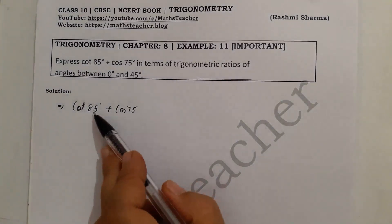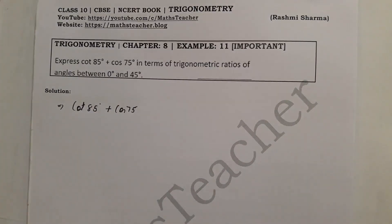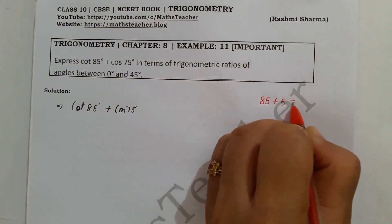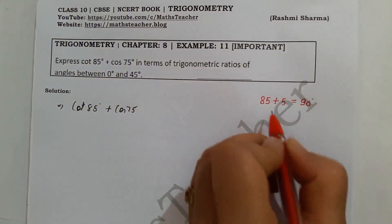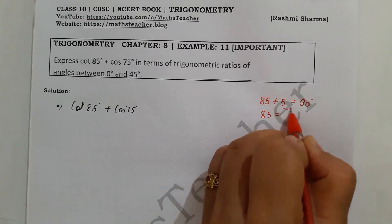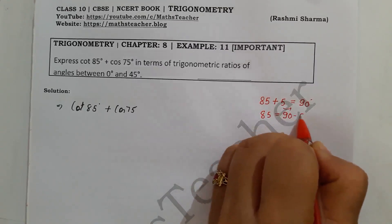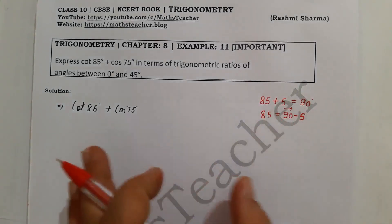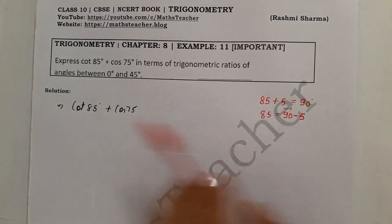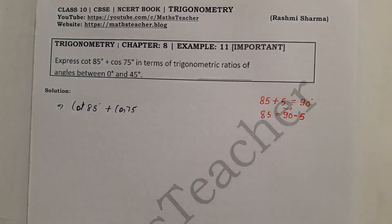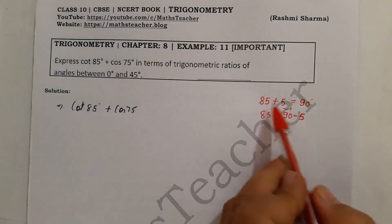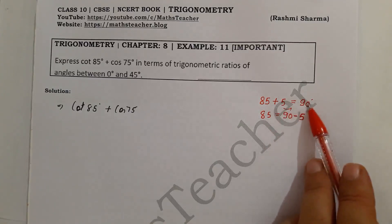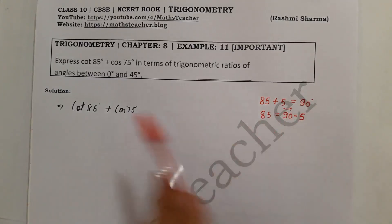We need to look at complementary angles — the sum of two complementary angles is 90°. For 85°, we ask: what do we add to 85 to get 90? We add 5, so 85° equals 90° minus 5°. We will substitute this value accordingly.